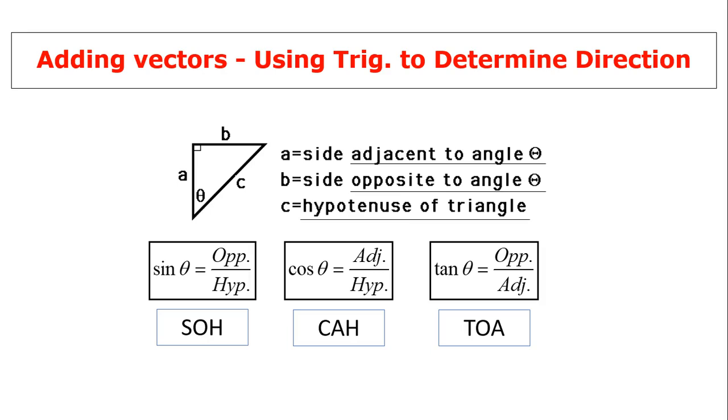Adding vectors using trig to determine directions. We can use Pythagorean theorem to find magnitude. To find direction, we have to use trig functions. In a right triangle, we have three sides relative to this angle theta. A is adjacent, meaning next to theta. B is opposite to theta. C is the hypotenuse.